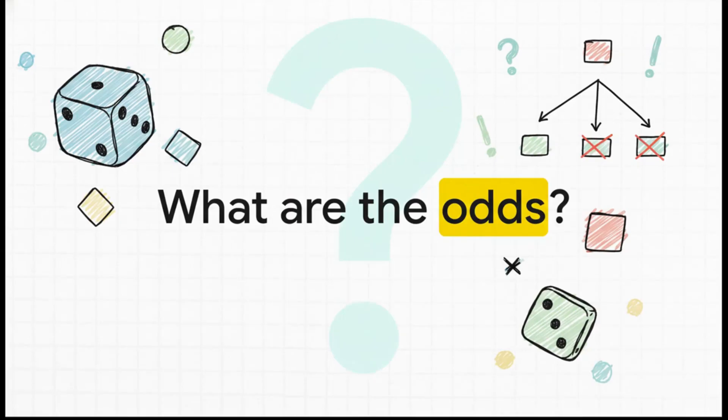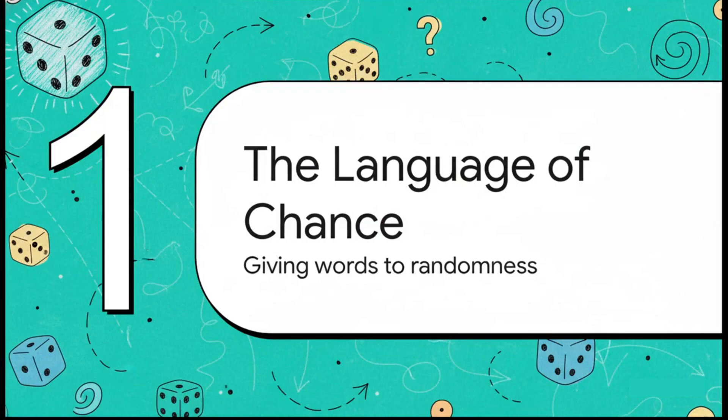I mean, we ask this all the time, don't we? What are the odds it's going to rain? What are my odds of winning this game? This simple question is really at the heart of everything we're talking about today. We're going to break down how we can answer it, not with a wild guess, but with a really logical and powerful framework. So first things first, before we can even think about calculating anything, we all need to be speaking the same language. This first section is all about building that shared vocabulary so we can talk about randomness in a clear way. Think of it as the foundation for the whole house.